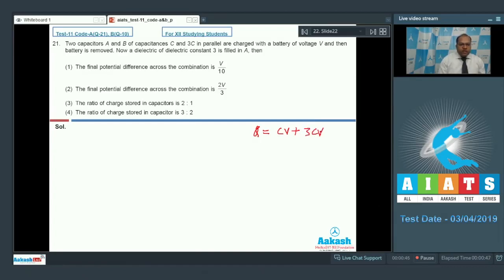Now when a dielectric is inserted in A its capacitance changes to 3C. So the common potential in this situation is total charge that is 4CV divided by total capacitance that is 3C plus 3C, 6C. So it comes out to be 2/3 of V.